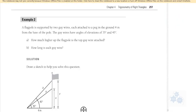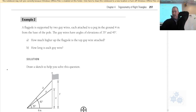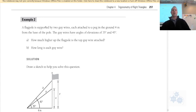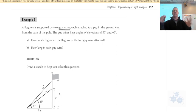For Example 2, these are a bit tricky because we have multiple angles and overlapping triangles — especially if no diagram is given. A flagpole is supported by two guy wires. Guy wires are support wires attached to the pole and to the ground — like big cables.